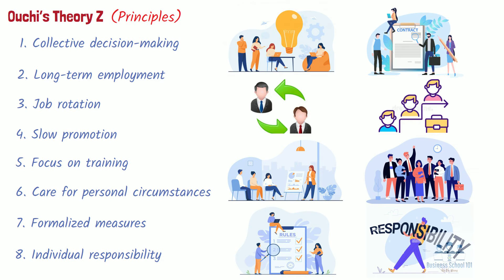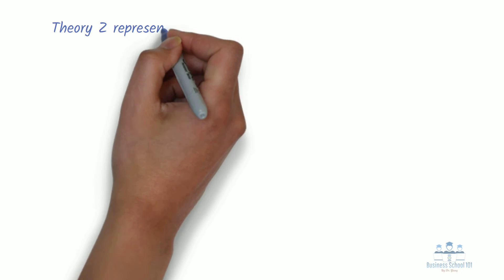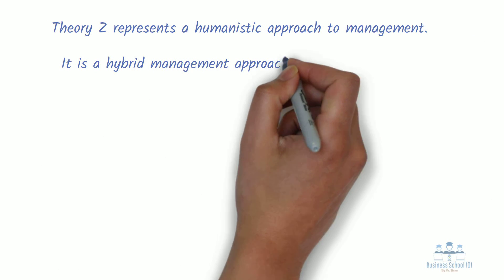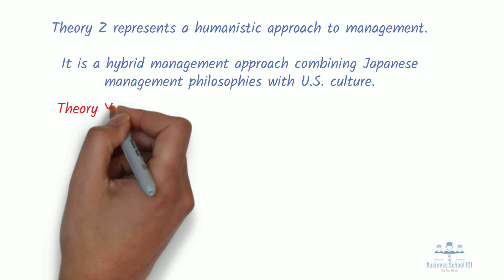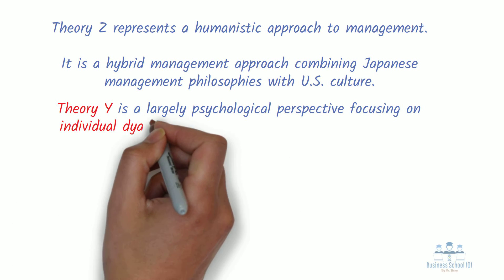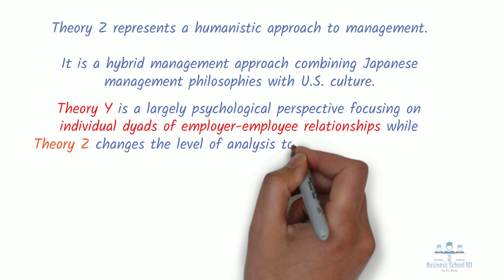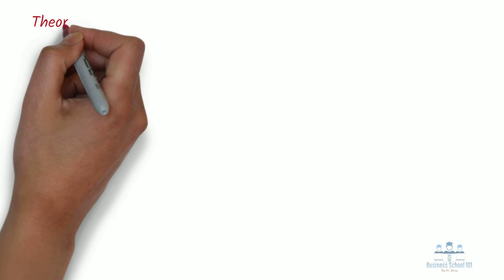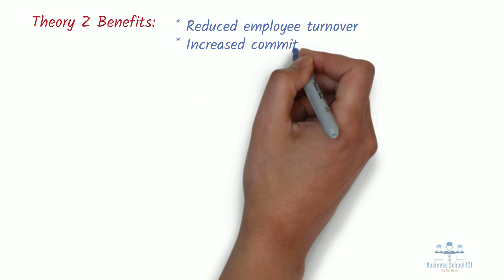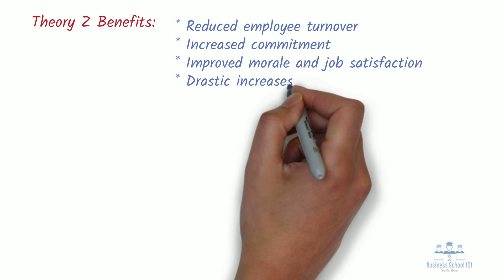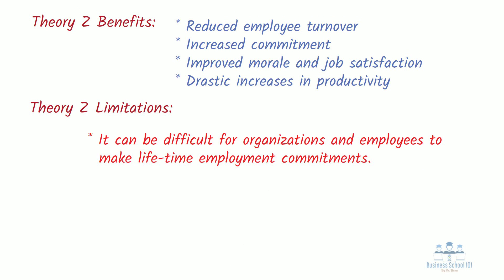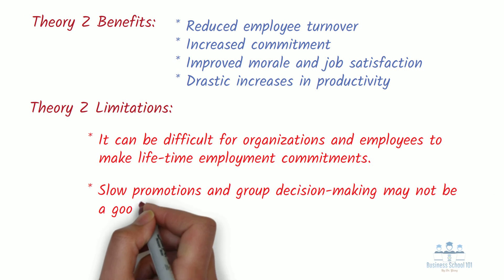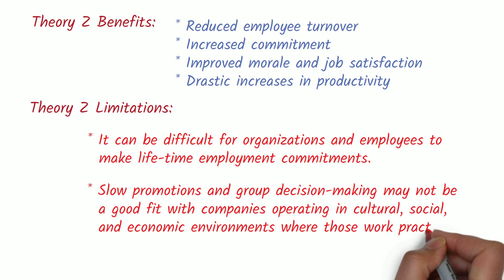In general, Theory Z represents a humanistic approach to management. It is a hybrid management approach combining Japanese management philosophies with U.S. culture. Theory Z breaks away from McGregor's Theory Y: Theory Y is a largely psychological perspective focusing on individual dyads of employer-employee relationships, while Theory Z changes the level of analysis to the entire organization. Professor Ouchi claimed the benefits of Theory Z would be reduced employee turnover, increased commitment, improved morale and job satisfaction, and drastic increases in productivity. Although Theory Z has many advantages compared with Theory X and Y, it is certainly not without limitations. First, it can be difficult for organizations and employees to make lifetime employment commitments. Second, slow promotions and group decision-making may not be a good fit with companies operating in cultural, social, and economic environments where those work practices are not the norm.